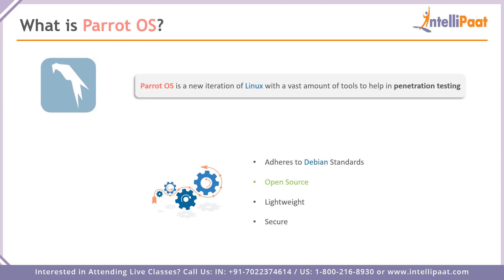A key similarity between Parrot OS and Kali Linux is that both adhere to the Debian development standards — all code repositories in both Parrot OS and Kali Linux follow these standards. Being open source gives users the chance to build together with the community and grow alongside each other. Parrot OS is amazingly lightweight, which gives it its specialty. Both Parrot OS and Kali Linux are secure, adding all privacy measures and providing tools for users to maintain anonymity, which is vital even when testing your own architectures.